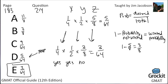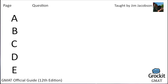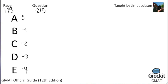On to number 215, page 183. Answer choices: 0, −1, −2, −3, −4. If 1/x − 1/(x+1) = 1/(x+4), then x could be what? The phrasing 'x could be' signals multiple possible values, likely from a quadratic. Setting up the equation with fractions, we need a common denominator.